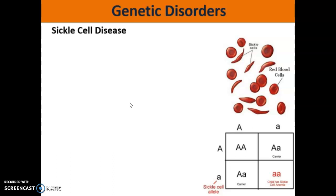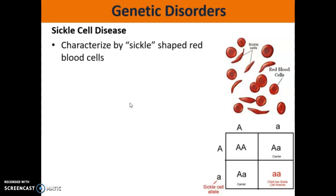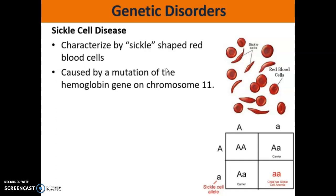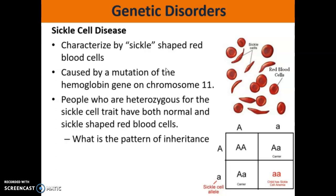The next disorder I want to talk about is sickle cell disease. This is a disease that affects your red blood cells — instead of being healthy and round, they have a pointy sickle shape. This is caused by a mutation in a hemoglobin gene found on chromosome 11. People who are heterozygous for sickle cell have some normal round red blood cells and some sickle-shaped red blood cells. Because of that, we know that the pattern of inheritance for sickle cell disease is co-dominance — heterozygous individuals have some normal cells and some sickle-shaped cells.